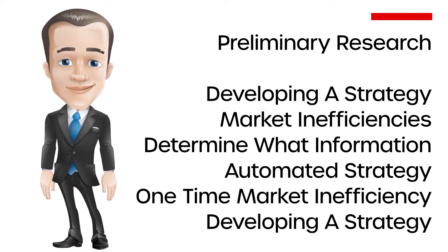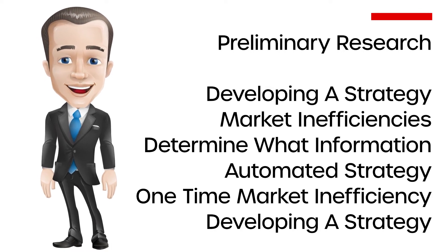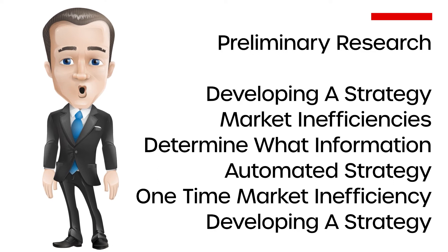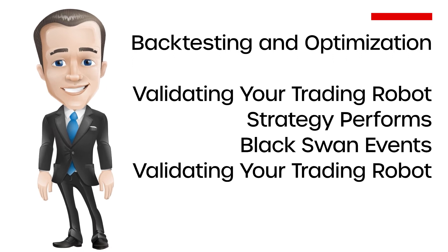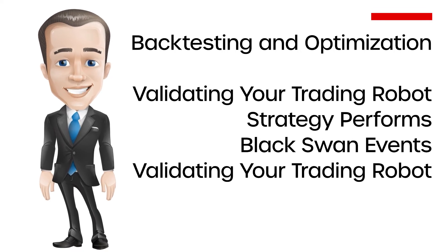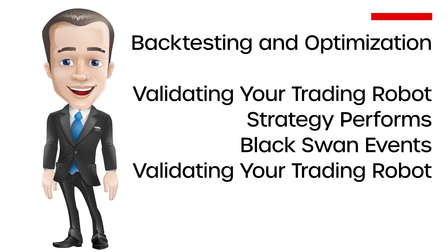Preliminary research focuses on developing a strategy that suits your own personal characteristics. Factors such as personal risk profile, time commitment, and trading capital are all important when developing a strategy. You can then begin to identify persistent market inefficiencies and code a trading robot suited to your own characteristics. Backtesting and Optimization focuses on validating your trading robot, which includes checking the code to ensure it is doing what you want and understanding how the strategy performs over different time frames, asset classes, or market conditions, especially in a black swan event such as the 2007–2008 financial crisis.